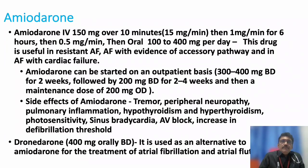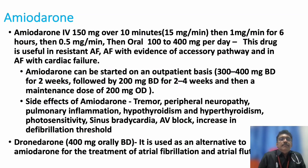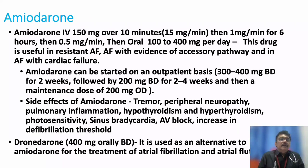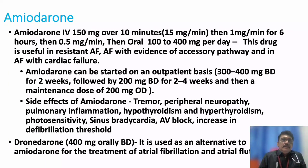If the patient is resistant to beta blockers and calcium channel blockers, amiodarone can be used. The dose is 150 mg over 10 minutes (15 mg/min), then 1 mg/min for 6 hours, then 0.5 mg/min, followed by oral tablets. There are side effects of amiodarone that must be monitored. Dronedarone is an alternative but not universally available.